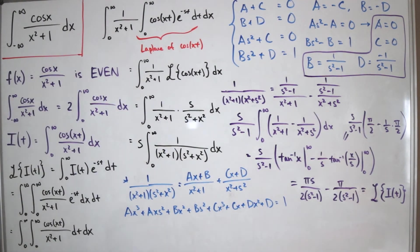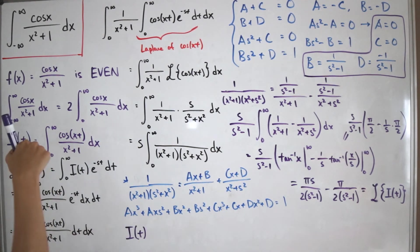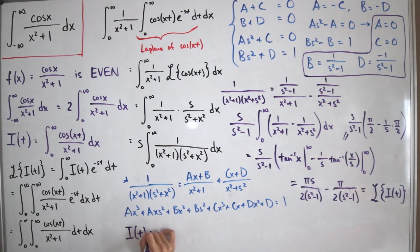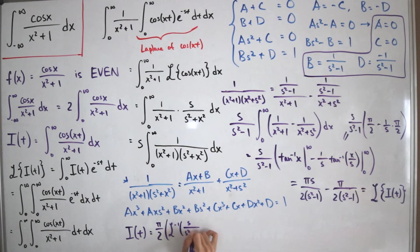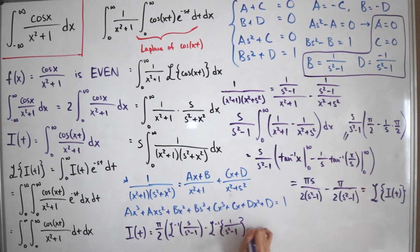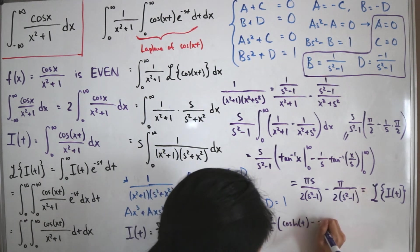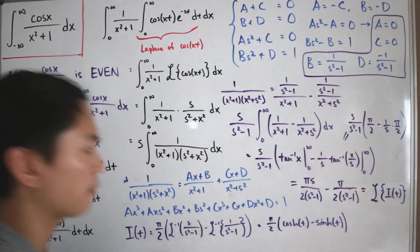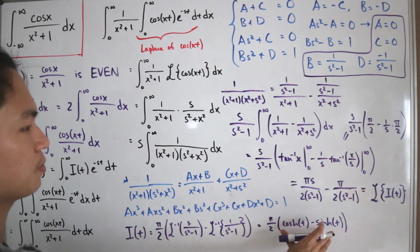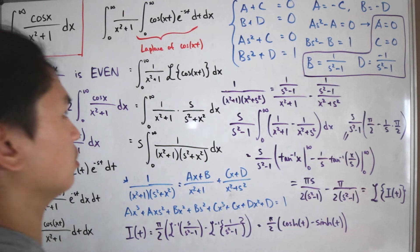Now we take the inverse Laplace transform to get back to I(t). We have I(t) = (π/2) times the inverse Laplace of s/(s²-1) minus the inverse Laplace of 1/(s²-1). From the Laplace tables, the inverse Laplace of s/(s²-1) is the hyperbolic cosine of t, and the inverse Laplace of 1/(s²-1) is the hyperbolic sine of t. So I(t) = (π/2)[cosh(t) - sinh(t)].